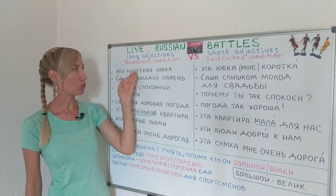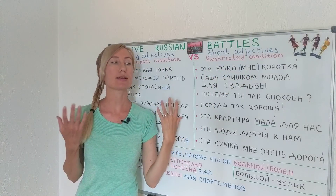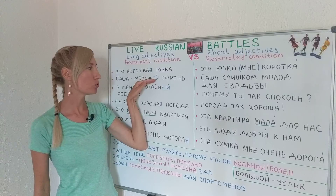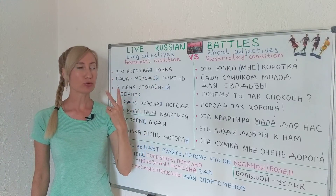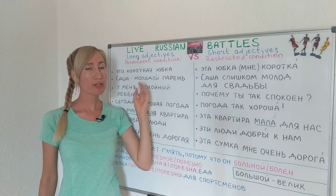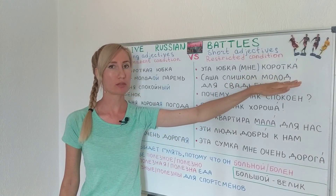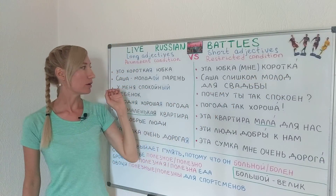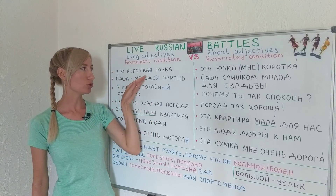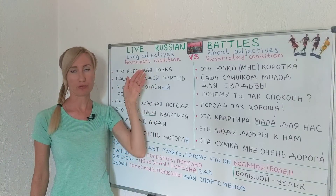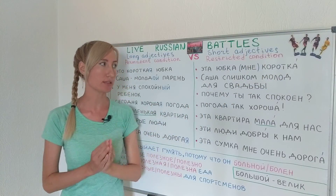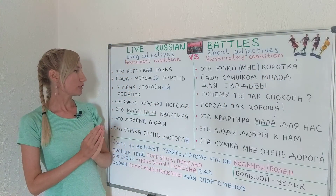Look at how short forms are created. For feminine, we usually remove the last letter — so короткая becomes коротка. For masculine, in general we remove the last two letters — молодой becomes молод. Also notice that the stress changes: молодой has stress at the end, and молод has stress on the first syllable.